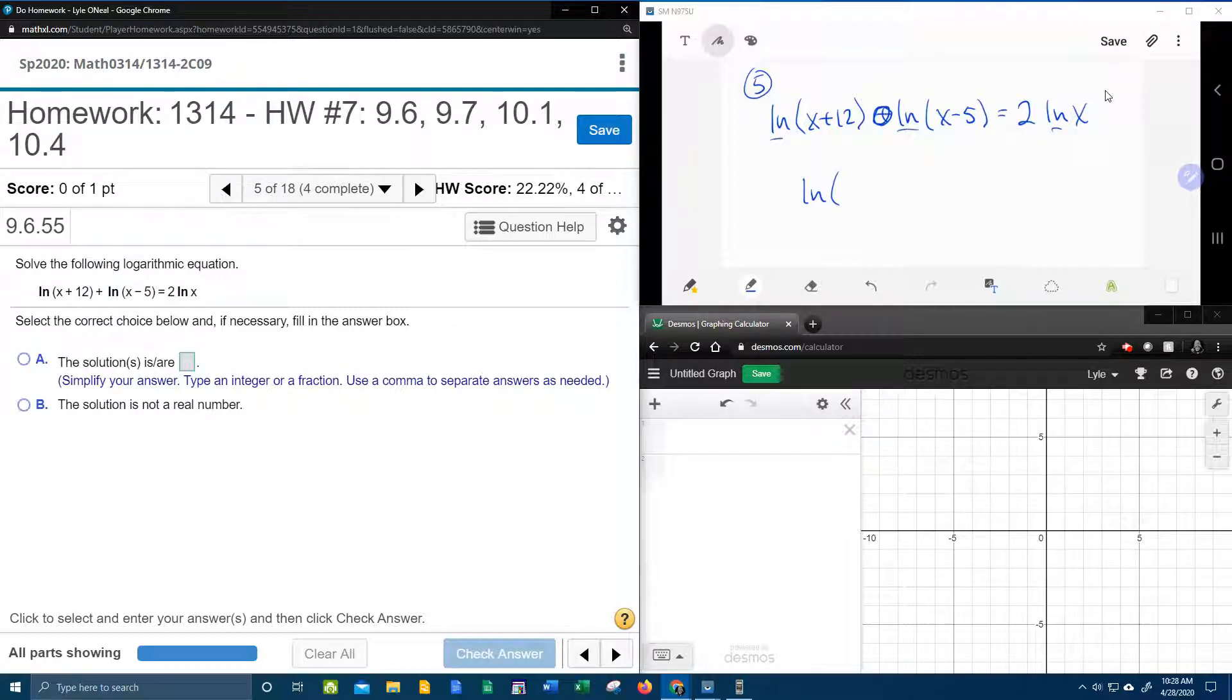Remember that the product rule says addition turns into multiplication. So the x plus 12 and the x minus 5 are going to end up being multiplied when I condense these two logs together using the product rule.